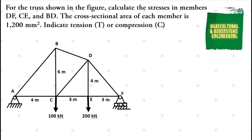The cross-sectional area of each member is 1200 square millimeters. Indicate tension (T) or compression (C).